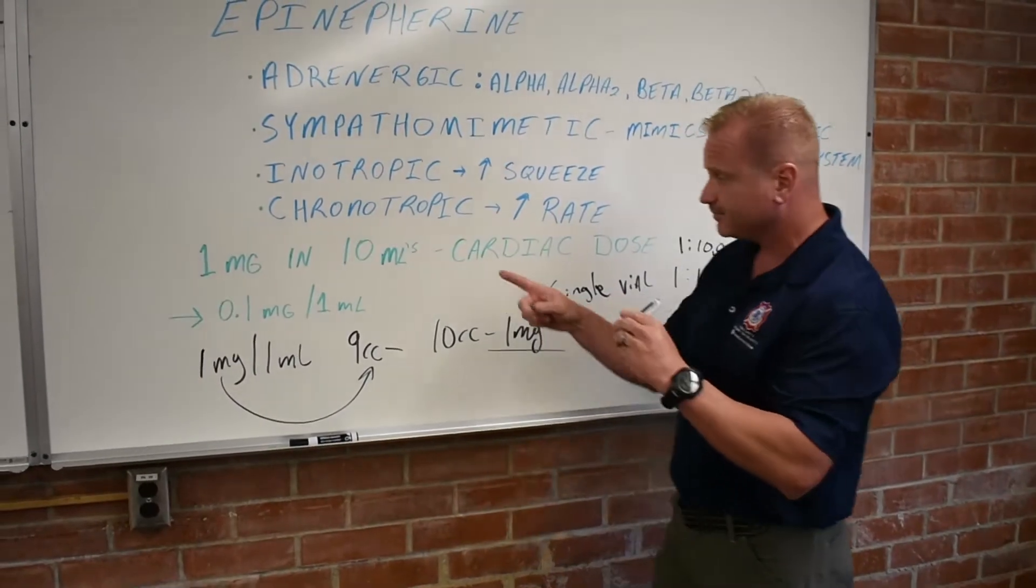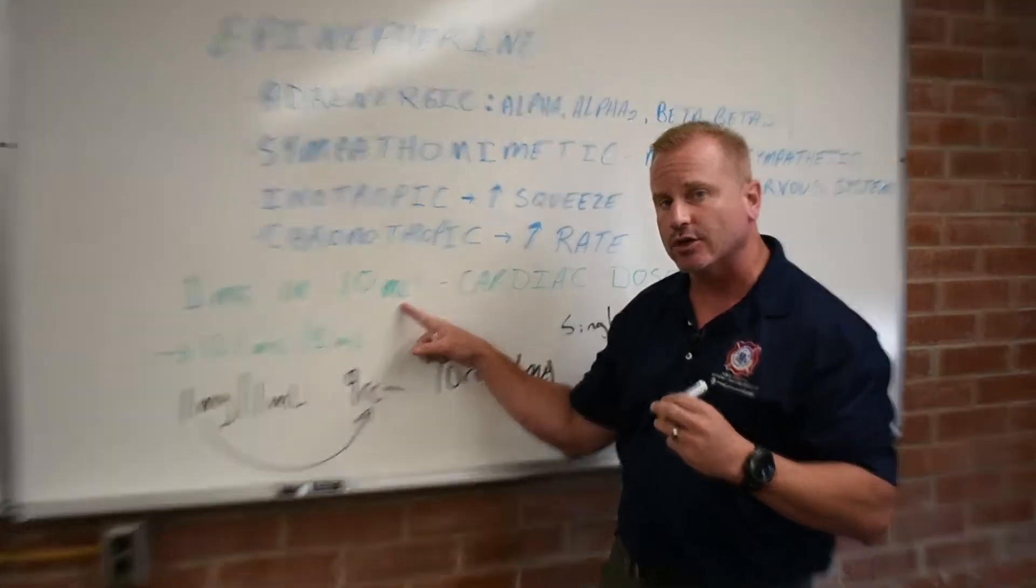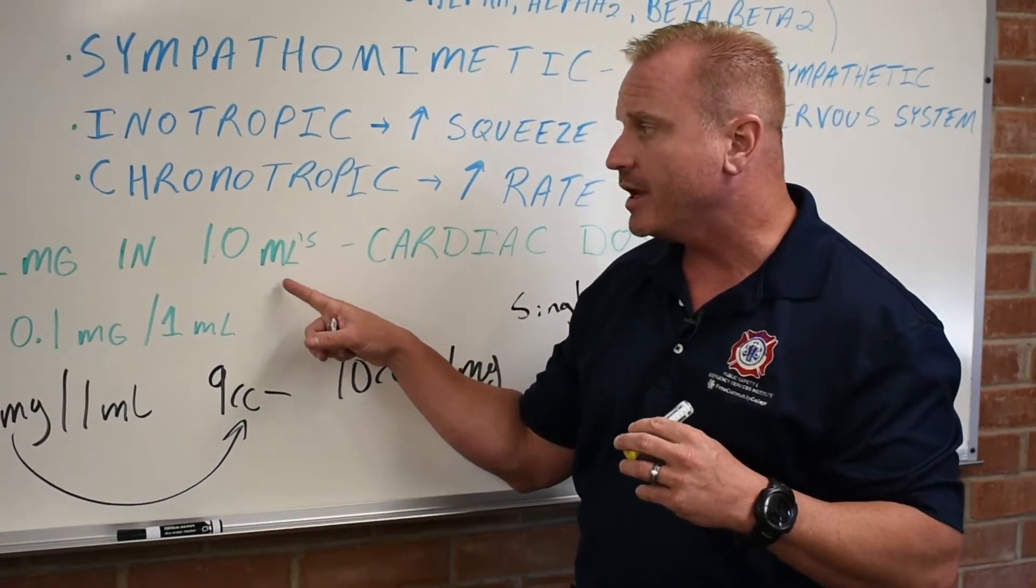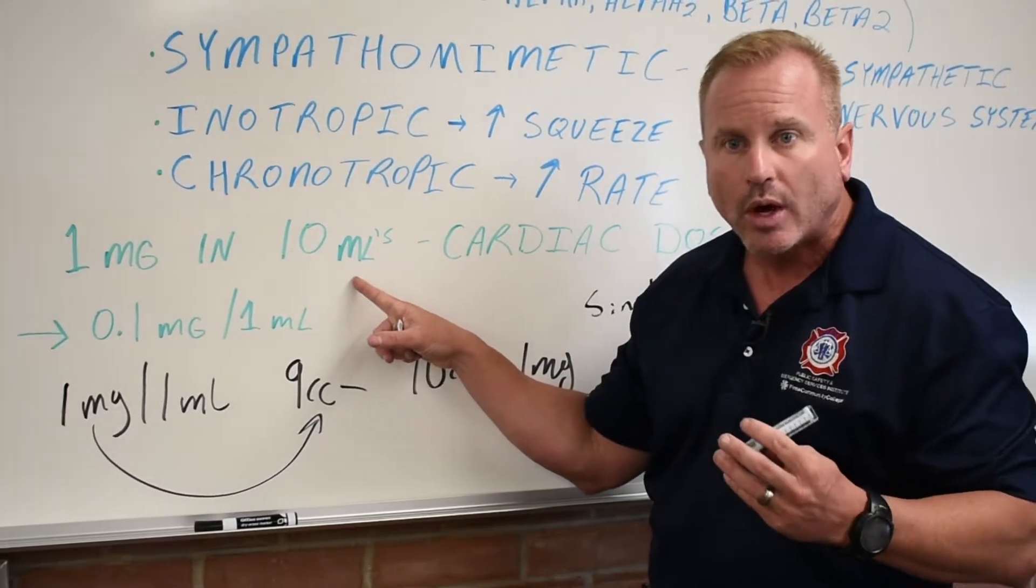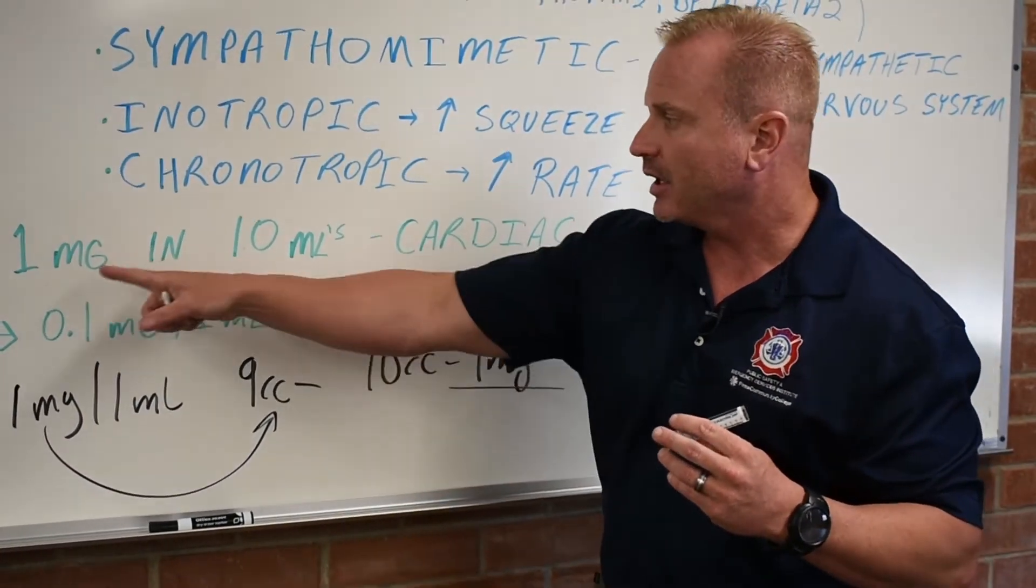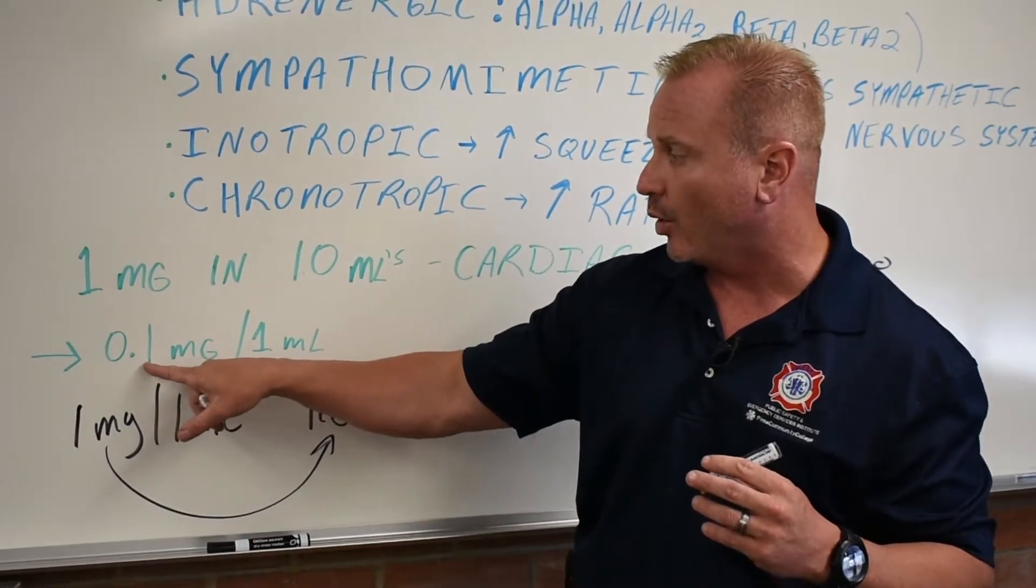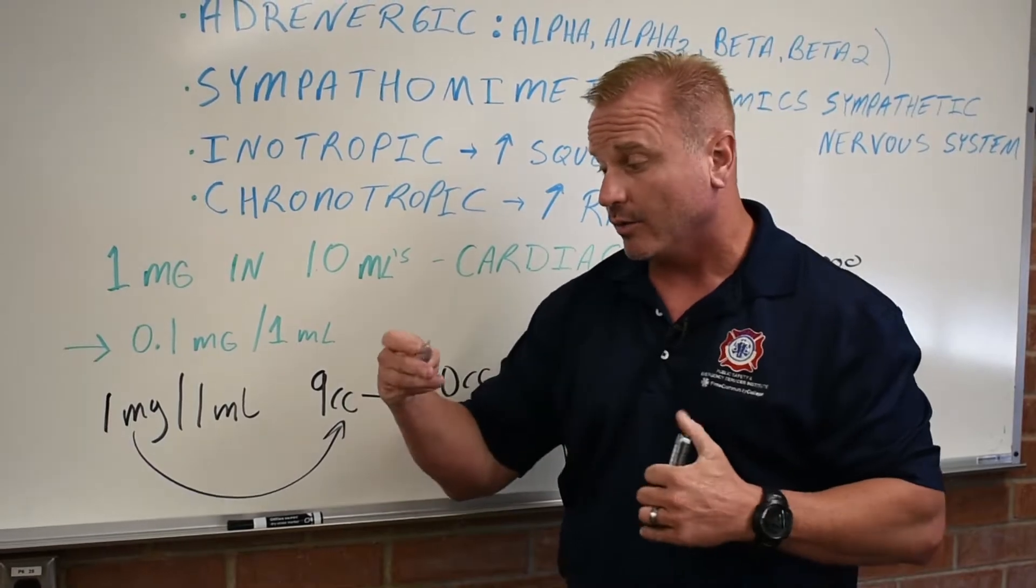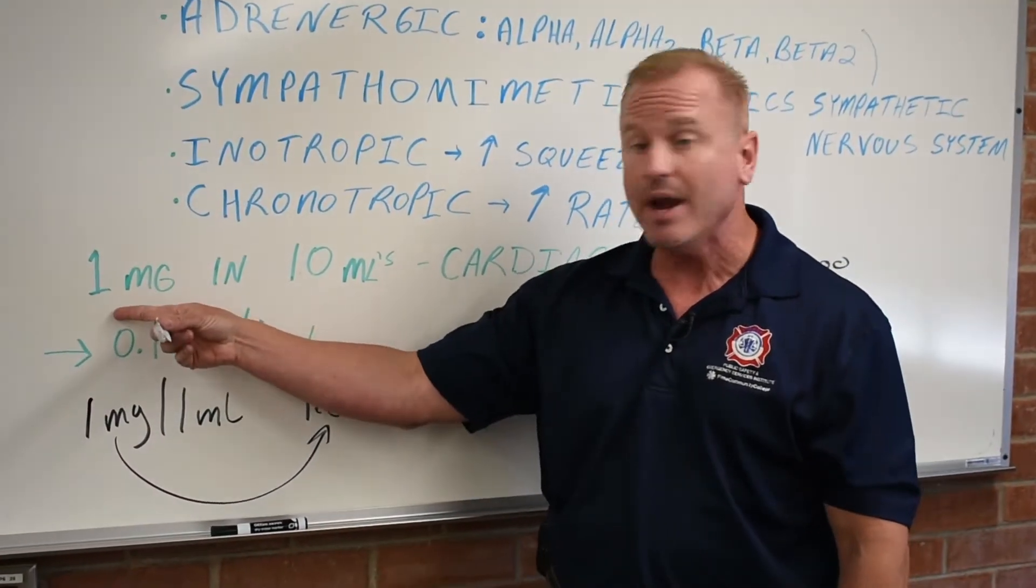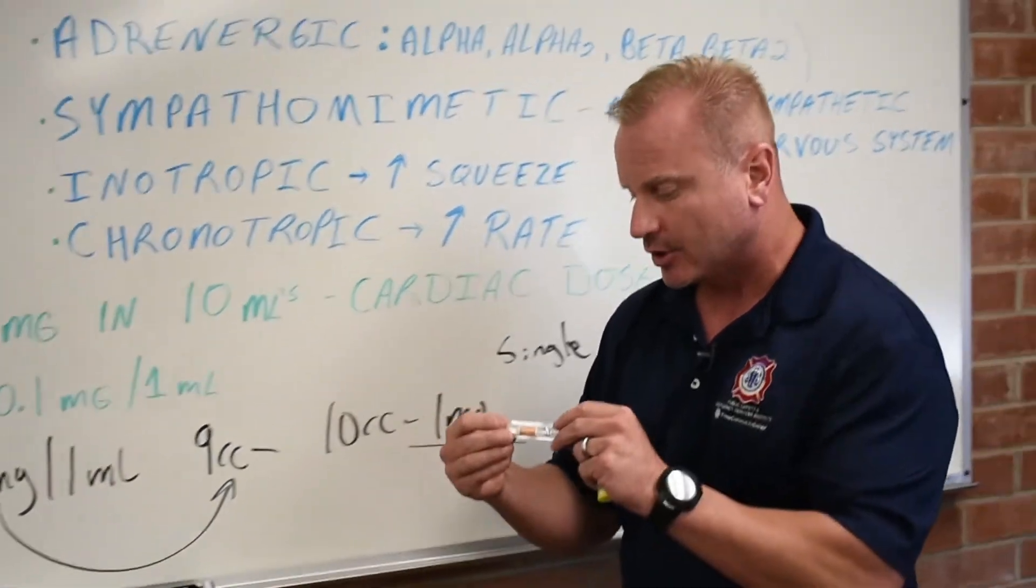This is given through the vastus lateralis at 0.3 to 0.5 in your standard adult patient. The cardiac dose epi is the 1 mg in 10 mLs, sometimes in severe extremis with anaphylaxis, asthma. The physician may order this at 0.1 to 0.2 mLs, slowly given through the IV, because it's diluted down. Remember, each mL is only 0.1 mg, where with the 1 to 1,000, each mL is 1 mg, is the whole dose, the whole cardiac dose, for example.